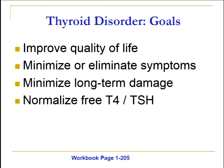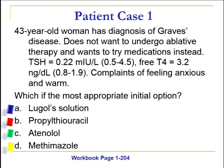The goals for treating thyroid disorders are to improve the overall quality of life of the patient, minimize or eliminate symptoms, minimize long-term damage — which is substantial with hyperthyroidism — and normalize free T4 and TSH levels. In our first case, we have a woman recently diagnosed with Graves' disease who does not want ablative therapy — usually the treatment of choice — and wants to try medications instead. She has a low TSH, a high free T4, and complains of feeling anxious and warm all the time. What is the most appropriate initial option: iodine therapy, PTU, atenolol, or methimazole?